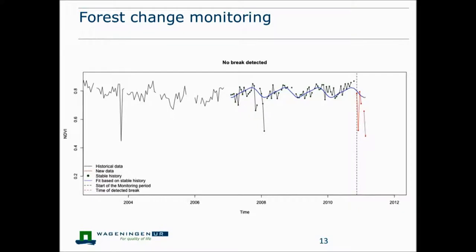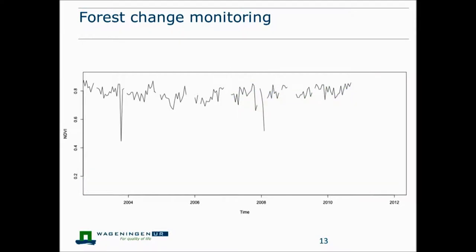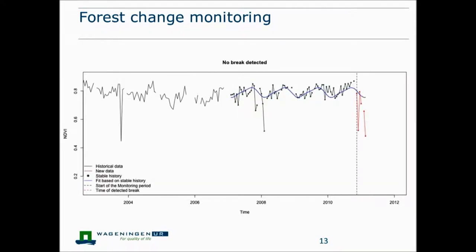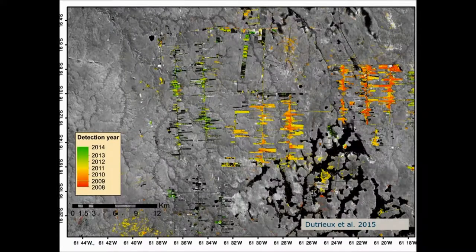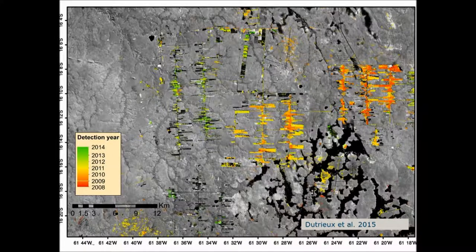A change is detected when there is a big difference between the blue line — the prediction based on history — and the red dots, which are recent observations indicating a deforestation event. That is the idea behind BFAST: it is applied spatially on all pixels to detect deforestation, time of change, and extent. Typical output is shown here for an area in Bolivia where recent changes are detected in green, showing the typical fishbone pattern. You can also see older changes going from green to yellow to red, representing changes detected back in 2008.